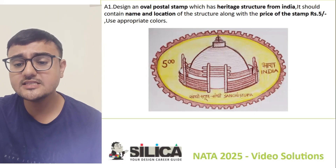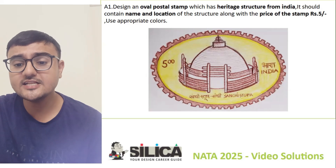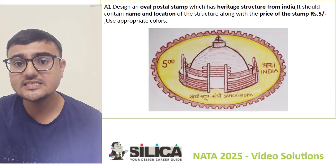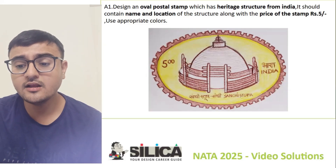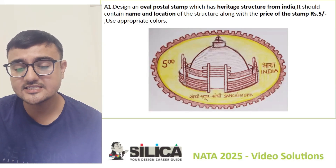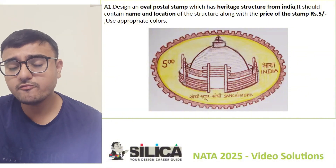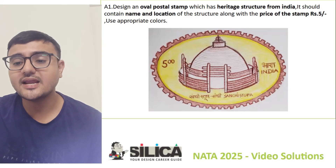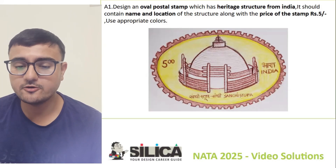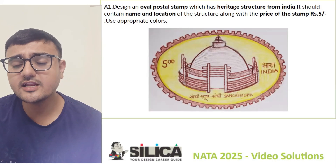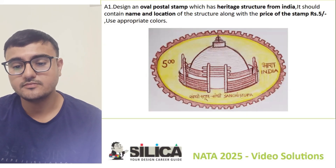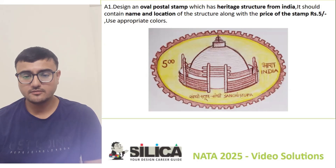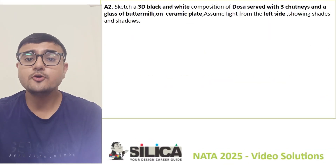In this composition, you can see a balanced composition. Your heritage structure should be in the central part. At the bottom you can see the name of the monument and the location. At the right side you can see the name of your country, and at the left side you can see the price of the stamp — 5 Rupees. All elements are included in this particular composition.